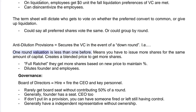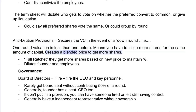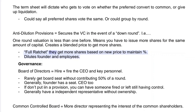Anti-dilution provisions protect the VC in the event of a down round — meaning one round's valuation is less than the prior round. This means you have to issue more shares for the same amount of capital, creating a blended price to give the VC more shares. Under a full ratchet, they receive additional shares based on the new lower price to maintain their ownership percentage, which dilutes founders and employees.